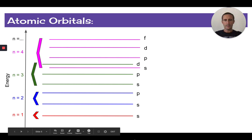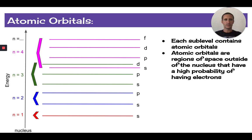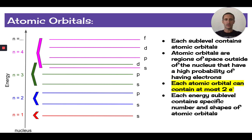The next thing that I want to talk about is atomic orbitals. A couple of notes about atomic orbitals is that each sublevel contains some of these atomic orbitals. And really, what an atomic orbital is, it's a region of space outside the nucleus that has a high probability of having electrons. Each atomic orbital can describe the location of, at most, two electrons. And each energy sublevel contains specific number and shapes of atomic orbitals. We'll take a look at those right now.